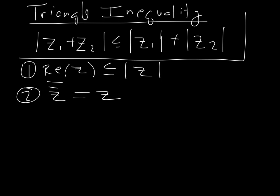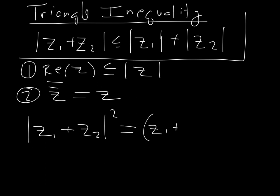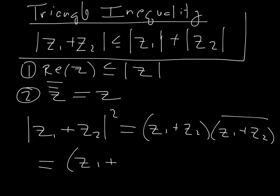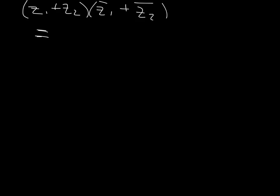With that in mind, let's look at how the proof works. We'll start by looking at the absolute value of z1 plus z2, squared. We saw in class that this equals z1 plus z2 times its conjugate — that's a property of conjugates — which equals z1 plus z2, times the conjugate of z1 plus the conjugate of z2.